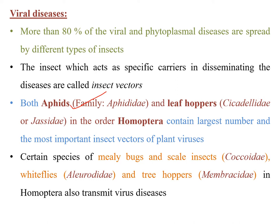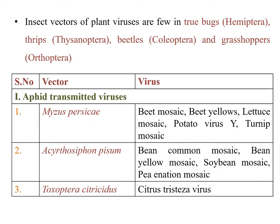Certain mealybugs and scale insects belonging to family Coccidae, whiteflies of family Aleyrodidae, and treehoppers of family Membracidae in Homoptera can also transmit some viral diseases. Insect vectors also present in other groups include true bugs in Hemiptera, thrips in the order Thysanoptera, beetles in Coleoptera, and grasshoppers in Orthoptera.